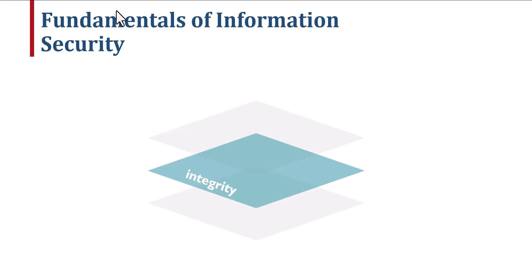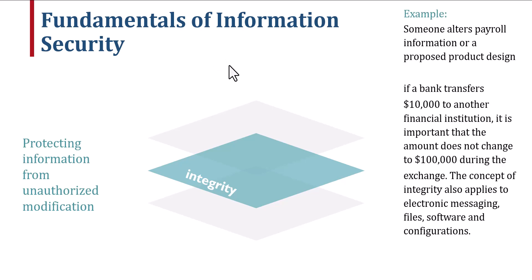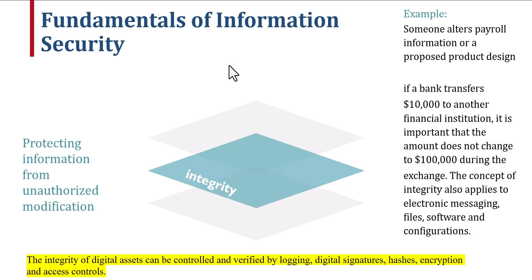Second pillar: integrity. Integrity ensures that information remains accurate and unaltered during storage, transmission, or processing. Digital signatures and checksums help us maintain data integrity. For example, someone alters payroll information or a proposed product design. Another example: if a bank transfers $10,000 to another financial institution, it is important that the amount does not change to $100,000 during the exchange. The concept of integrity also applies to electronic messaging, files, software, and configurations.